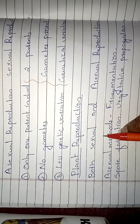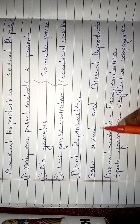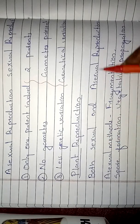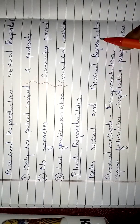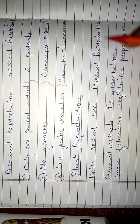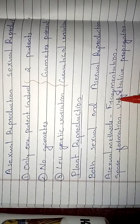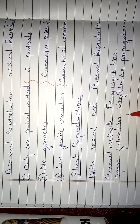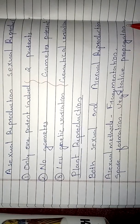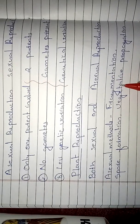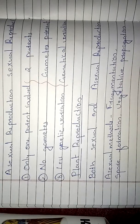In plants, sexual reproduction is done using the male and female gametes produced within the flower. For asexual reproduction, different kinds of methods exist — some examples are fragmentation, spore formation, and vegetative propagation. The details of all these topics I will cover in the next video. Thank you.